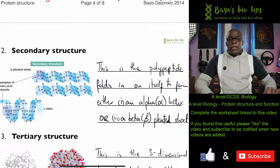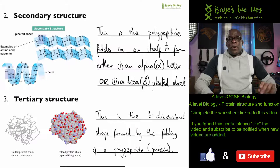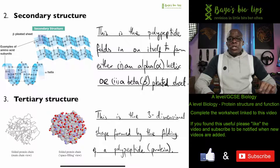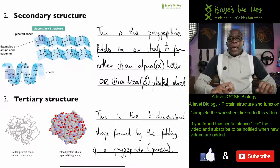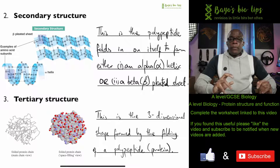The next level of complexity is the secondary structure — how the primary structure folds in on itself. When it folds it forms either an alpha helix or a beta pleated sheet. A beta pleated sheet looks a little like those paper fans you would have made when you were younger — folding a piece of paper over and over to form an accordion-like structure. An alpha helix looks like an old-style coiled cable — basically a coiled structure.